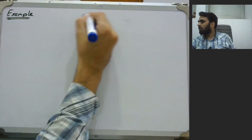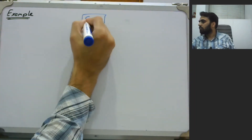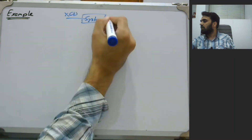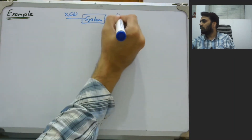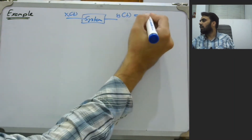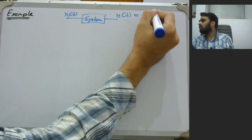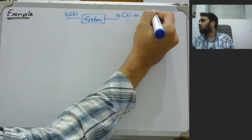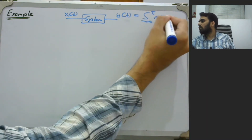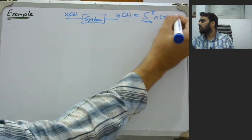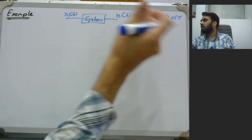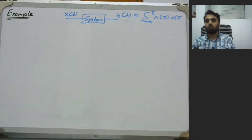We have a system with an input X of T and an output Y of T, and that output is the integral from minus infinity to T of X of T. So the system is just performing an integration of the input.